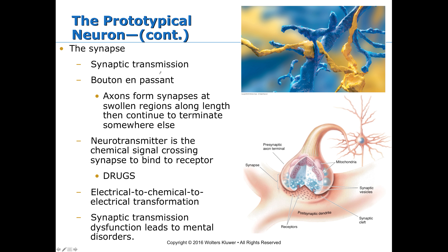Neurotransmitters are the chemical signals that cross the synapse and bind to receptors studded on the post-synaptic membrane. This is where drugs come in — all drugs have their effects at the level of the synapse. In this whole process, there is an electrical-to-chemical-to-electrical transformation: information comes down electrically, chemicals are released, these interact with proteins on the post-synaptic membrane, and this allows for an electrical communication to occur. Synaptic transmission dysfunction leads to mental disorders as well as to several brain disorders.